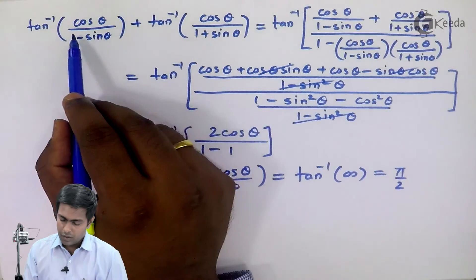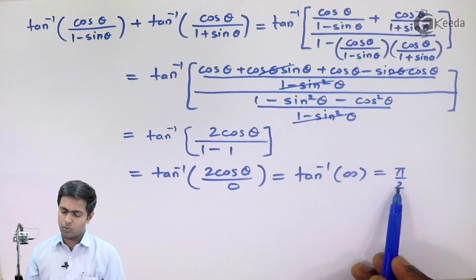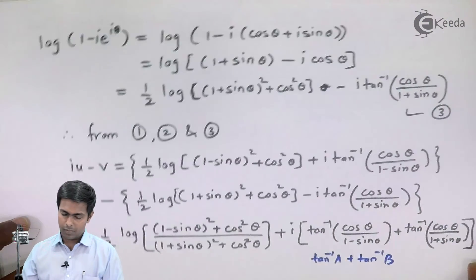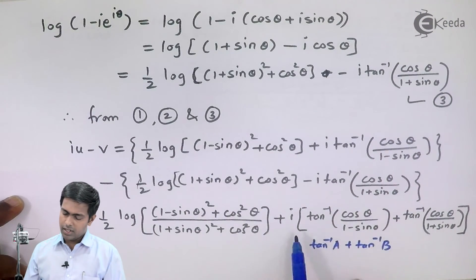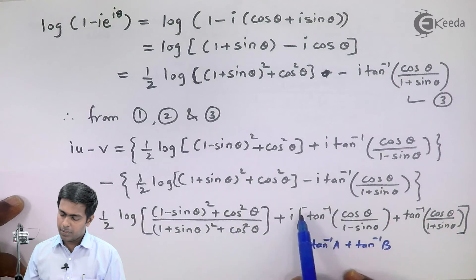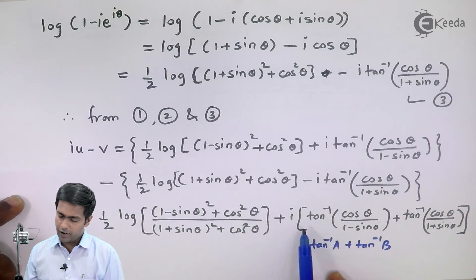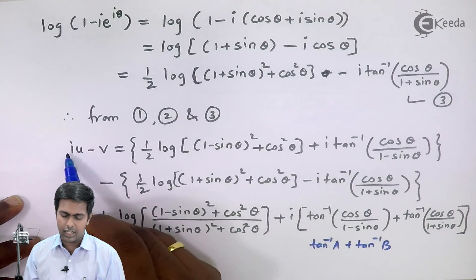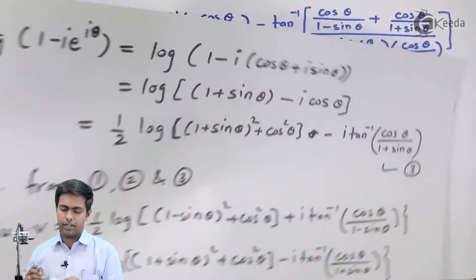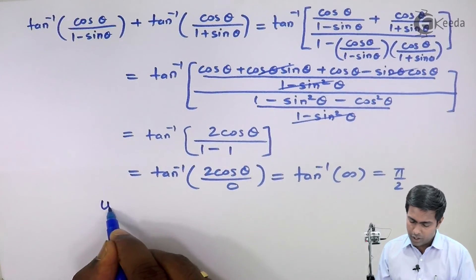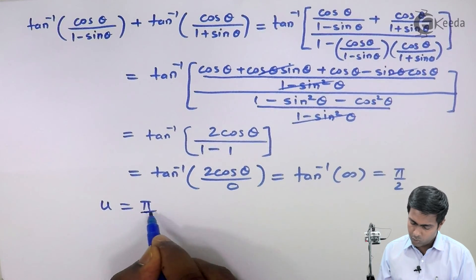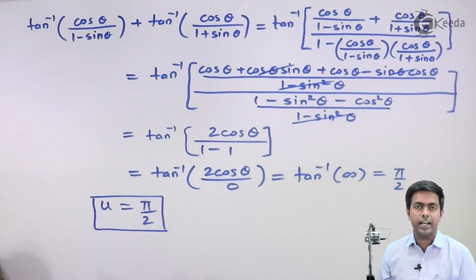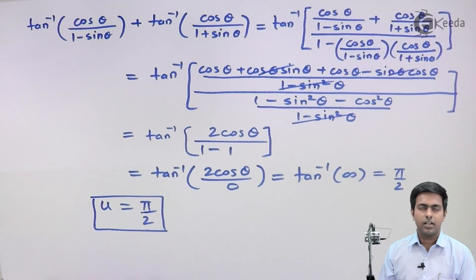Substituting this value back, the imaginary part gives i·(π/2). Comparing with the left-hand side imaginary part i·u, we get u = π/2. This is the second required result, completing the proof.